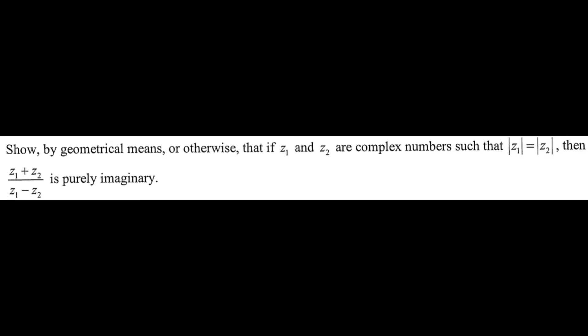In theory, for a complex number to be purely imaginary, for this addition and then subtraction of the two numbers divided by each other, for that to be purely imaginary basically means that it lies on the imaginary axis. Or in other words, the argument of this thing is either plus or minus 90 degrees.